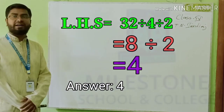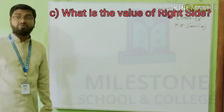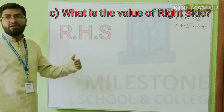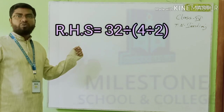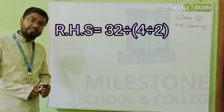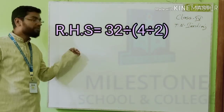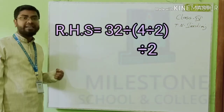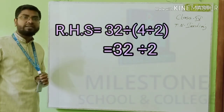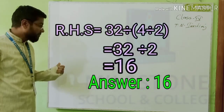Now C number: what is the value of the right side? Right side short form is RHS — right hand side. RHS equals 32 divided by bracket 4 divided by 2 bracket close. Now there is a bracket — which part do we have to do first? The bracket part. So 4 divided by 2 equals 2. Then 32 divided by 2 equals 16. So C number answer is 16.